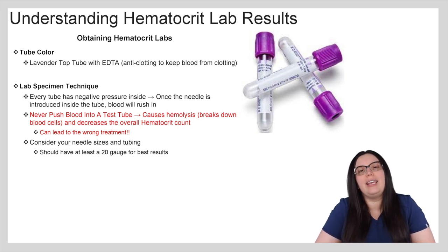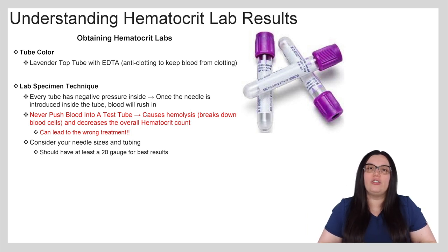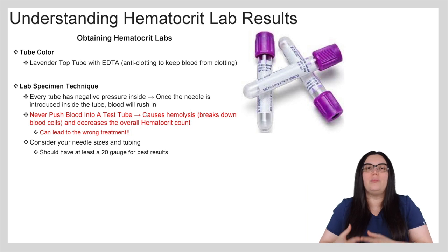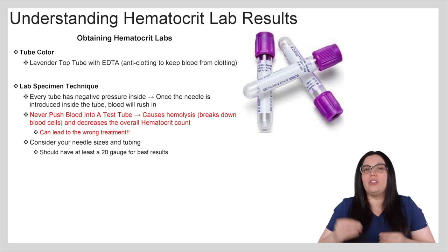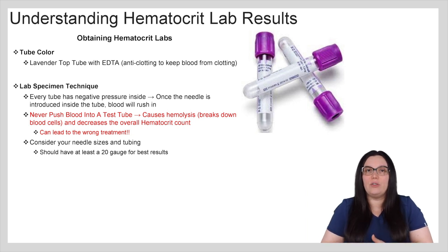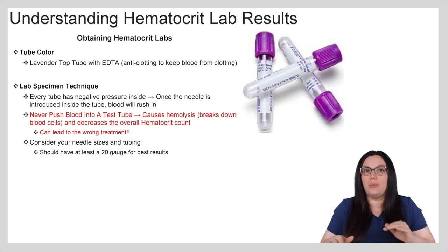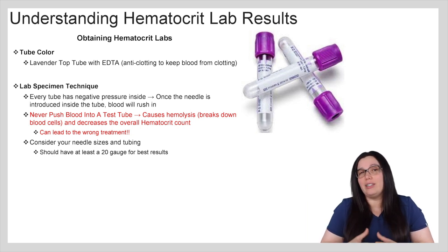You also want to take into consideration the needle size as well as the tubing. Your needle should be no less than 20 gauge for the best results. You really want to make sure that you have at least an 18 or 20 gauge when obtaining these lab values, because it will decrease the potential for hemolysis taking place and decrease our chances of treating hematocrit inappropriately.